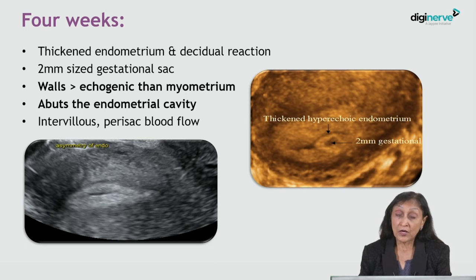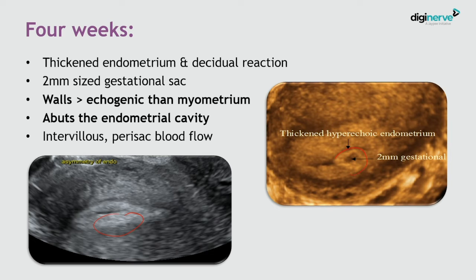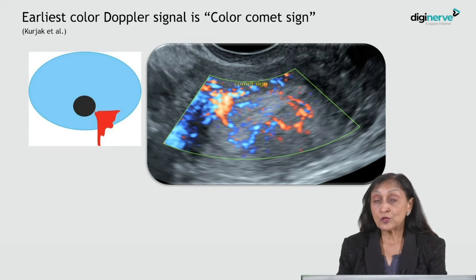At four weeks of pregnancy, the endometrium is thickened and there is decidual reaction which gives rise to hyperechogenicity of the endometrium. The gestational sac, if seen at that time, is just two millimeters. The walls of the gestational sac are hyperechoic relative to the myometrium and abut the endometrial cavity. On Doppler, a parasac blood flow can also be seen.